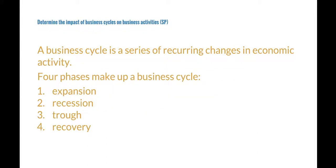A business cycle is defined as a series of recurring changes in economic activity, and the four main types of business cycles are expansion, recession, trough, and recovery. During expansion, the economy is flourishing — it is a good time for businesses to start up or expand due to the increased output of goods and services, while recession is a time of economic slowdown.